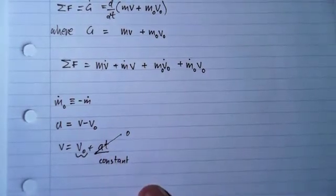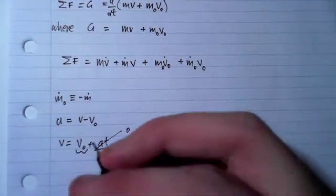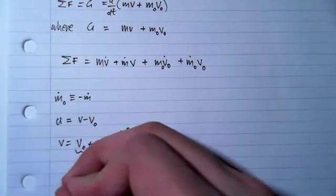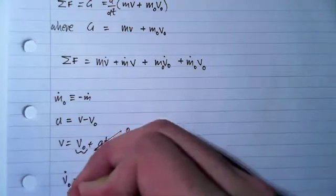And what happens when you derive a constant? You end up getting zero. So v₀ dot equals zero.